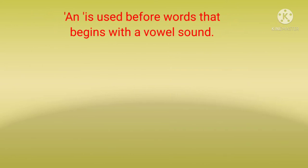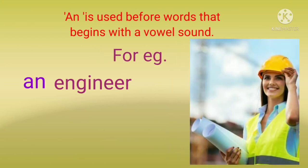Next, use of 'an.' 'An' is used before words with a vowel sound. जो vowel sound से start होते हैं उनके साथ हम 'an' article लगाते हैं. For example, 'an engineer.' Engineer word की sound vowel 'e' से start होती है, तो we will use 'an' article here. तो हम 'an' article कब यूज़ करेंगे? जब sound vowel sound आती हो — A, E, I, O, U.